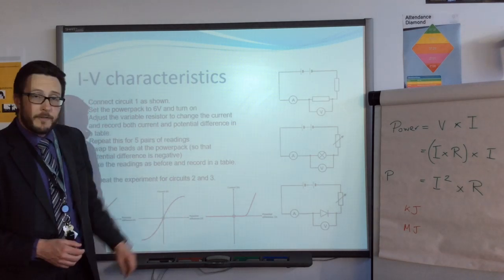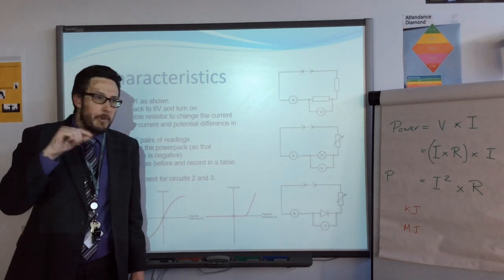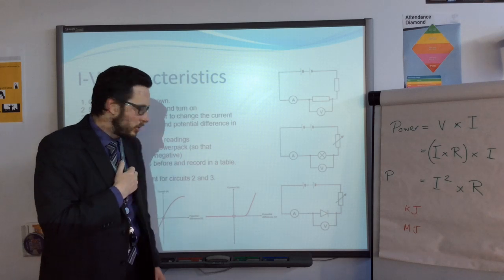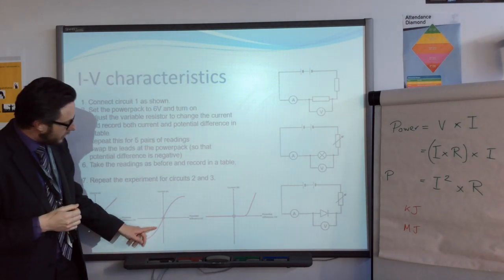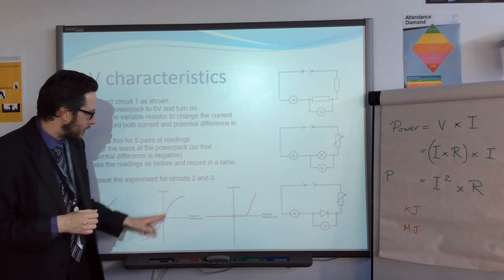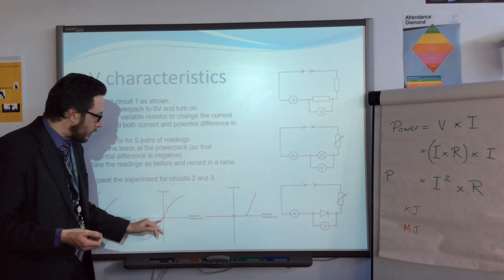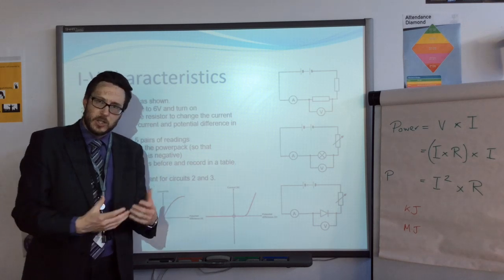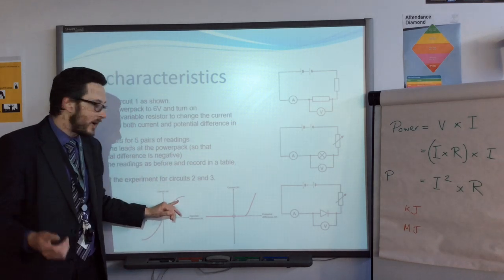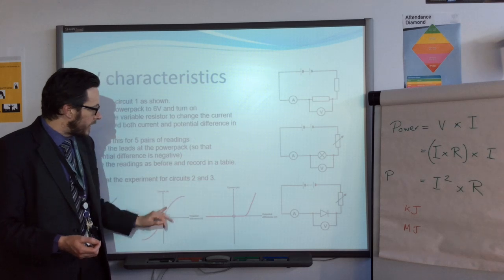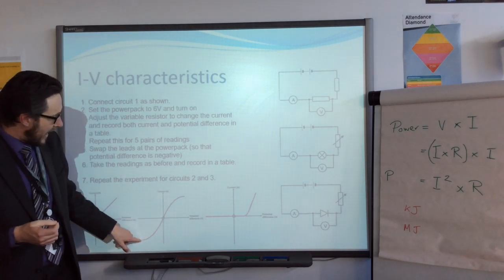This is the graph for a filament light bulb. A filament light bulb is one with the thin wire that goes through it. In the middle it looks the same, it's a straight line, but it curves off at either end. That's because as the voltage increases, the resistance of the wire increases, gives out light radiation, and the line levels off at the end.